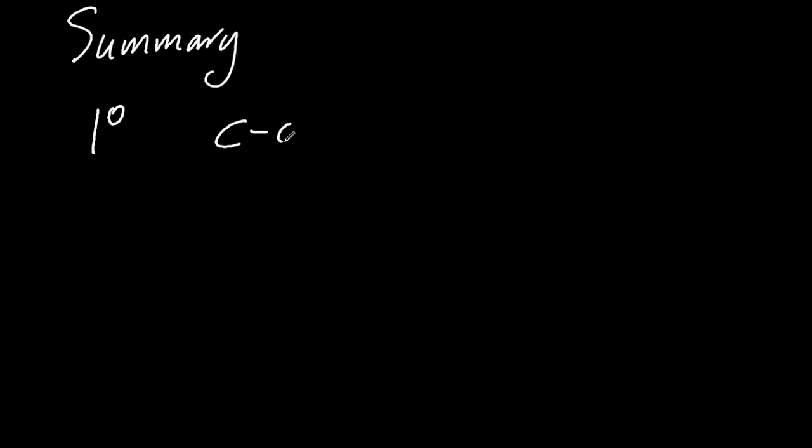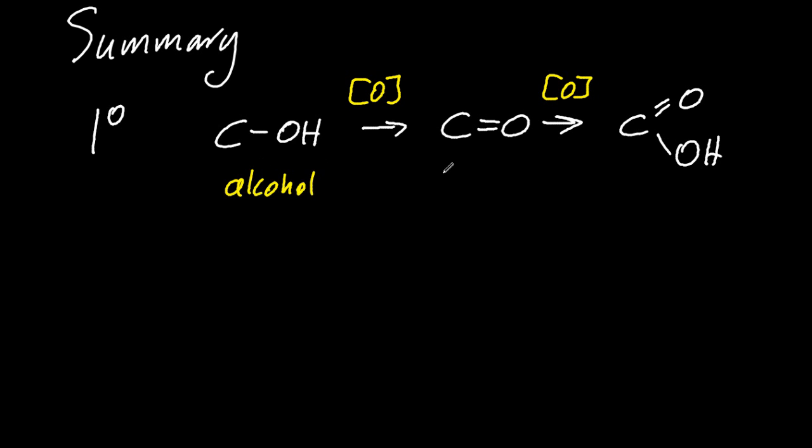A very quick summary. So a primary alcohol goes to an aldehyde, goes to a carboxylic acid. If you oxidise them, the oxidiser is acidified dichromate, and it goes from orange to green.